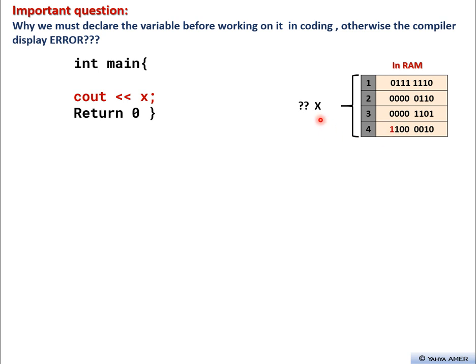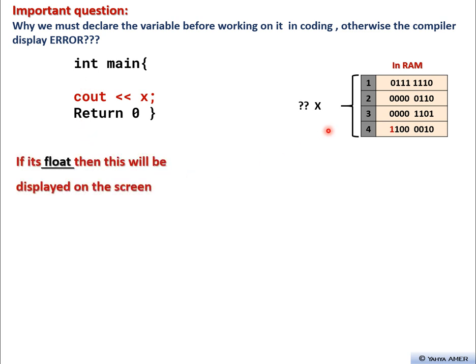If X is stored in RAM in a certain binary format, we can read it in different ways — in fact four ways: as float, as signed integer, as unsigned integer, or as string (array of characters). That's why we must determine the type of the variable; otherwise the compiler gives an error.